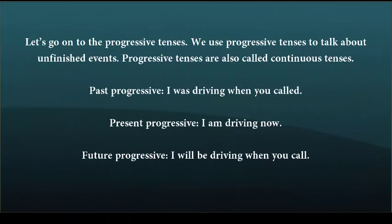Let's go on to the progressive tenses. We use progressive tenses to talk about unfinished events. Progressive tenses are also called continuous tenses. Past progressive: I was driving when you called. Present progressive: I am driving now. Future progressive: I will be driving when you call.